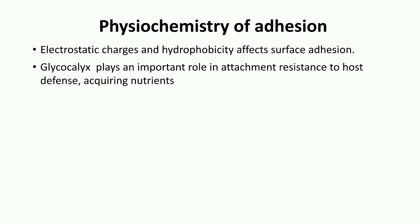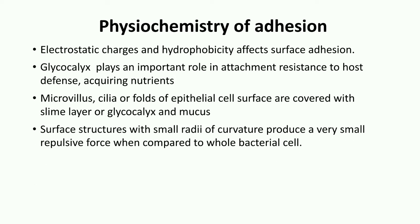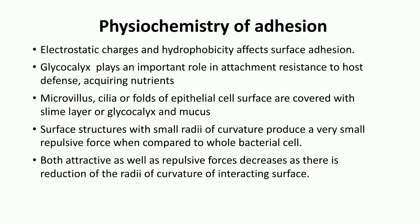As the outermost layer of the bacterial surface, the glycocalyx is important in the formation of microcolonies, attachment to the surface, resistance to host defense, and acquisition of nutrients. Microvilli, cilia, or folds on the epithelial cell surfaces are covered by a layer called the slime layer, glycocalyx, and mucus. Bacterial surfaces are commonly surrounded by complex polymers or filamentous appendages. Surface structures with small radii of curvature produce much less repulsive forces than the whole bacterial cell.